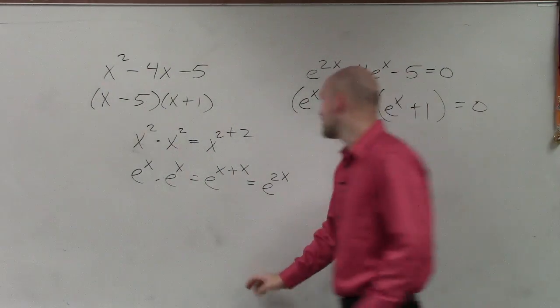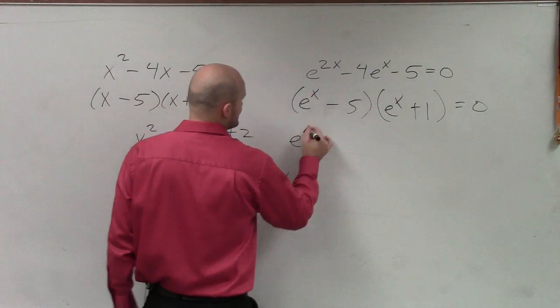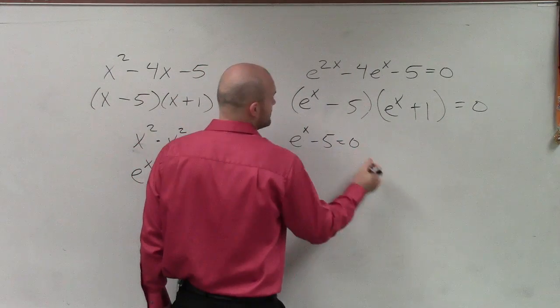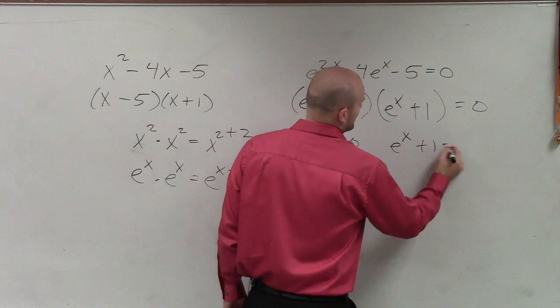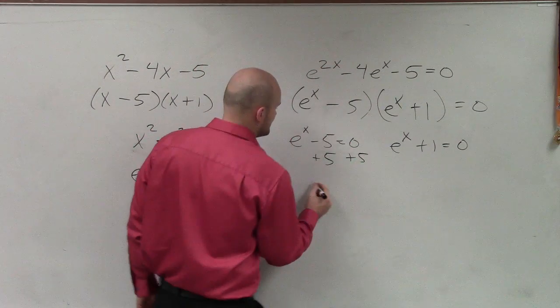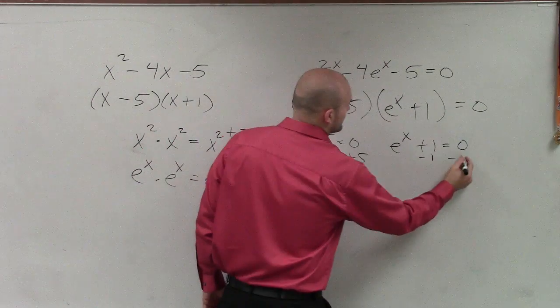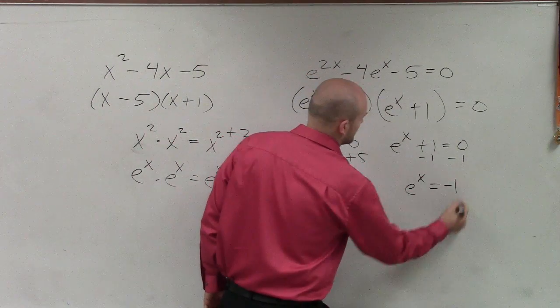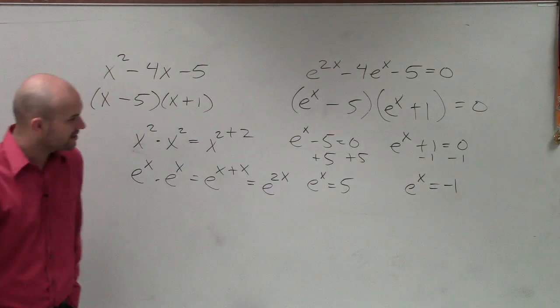Now I can apply the zero product property. So I can say e to the x minus 5 equals 0, e to the x plus 1 equals 0. To solve, we write 5. So I say e to the x equals 5, e to the x equals negative 1.